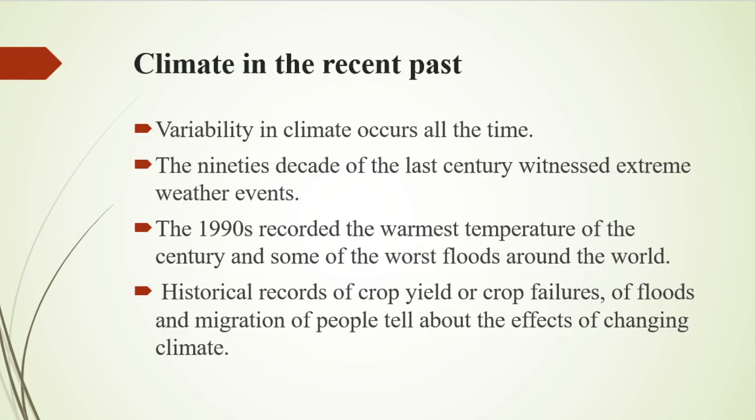Climate in the recent past: Variability in climate occurs all the time. The decade of the 1990s witnessed extreme weather events — the 1990s recorded the warmest temperatures of the century and some of the worst floods around the world. During the 1930s, severe floods occurred in the Southwestern Great Plains of the U.S. Historical records of crop yield, crop failures, floods, and migration of people tell about the effects of changing climate.